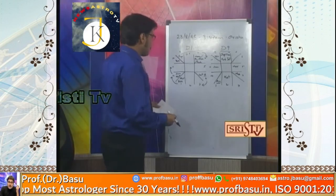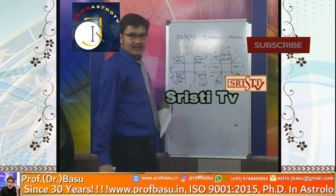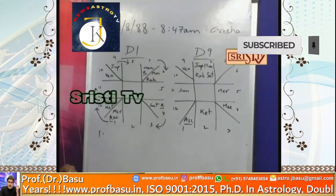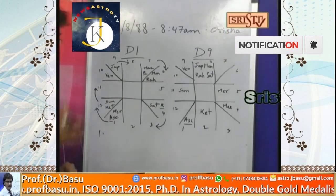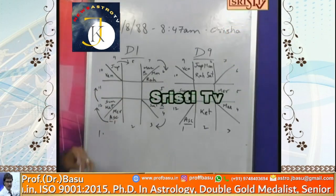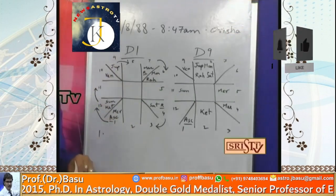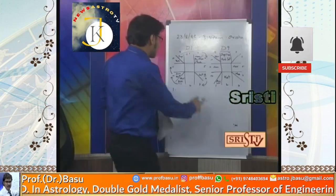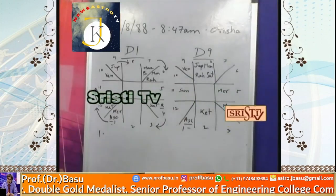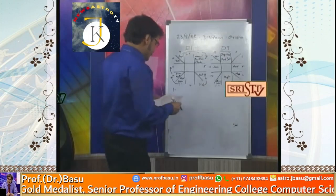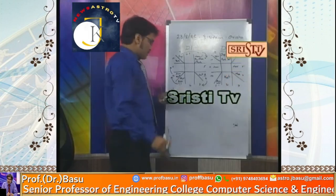Starting from point one — the ascendant. Here we can see that the ascendant is Bharghatama. Bharghatama means when a planet is placed in the same sign in both D1 and D9. The ascendant is placed in Virgo, so the ascendant is Bharghatama. This is a good sign.